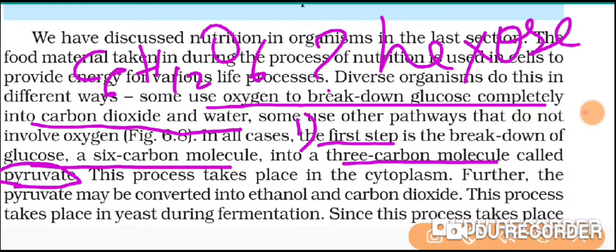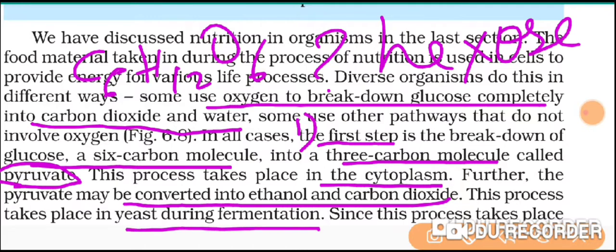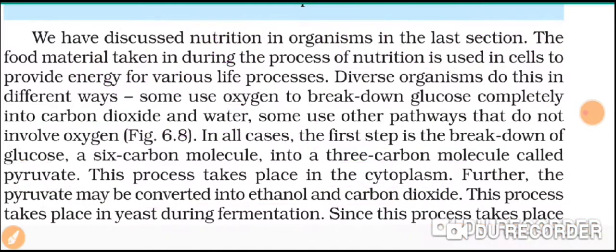The process of glucose converting to pyruvate takes place in the cytoplasm and in the absence of oxygen — oxygen is not required. This pyruvate is then further broken down in the cytoplasm itself into ethanol and carbon dioxide. That is called the fermentation process.